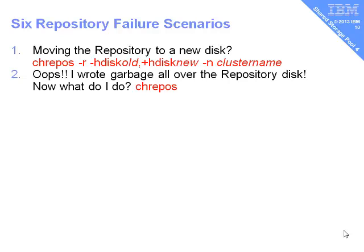The VIO servers will be logging that there's something wrong with the repository disk into their error logs. Once you spot that, you run the change repository disk command with the same syntax as before, and it will create a new one on the new LUN. I tend to keep two LUNs available — one I'm actually using, and a spare on a different disk subsystem I can move to if I have problems. Off the record, I asked the developers how you can rebuild the repository disk when I destroyed it. They said every VIO server has a copy in a file, so once they've agreed amongst themselves that it's gone and needs rebuilding, they just copy it back into the repository disk.